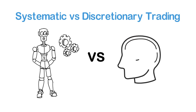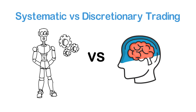In essence, comparing systematic vs. discretionary trading comes down to comparing man and machine. Systematic strategies take advantage of the insane speed at which computers can analyze data and make decisions based on this data.